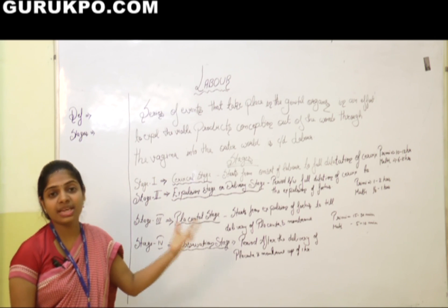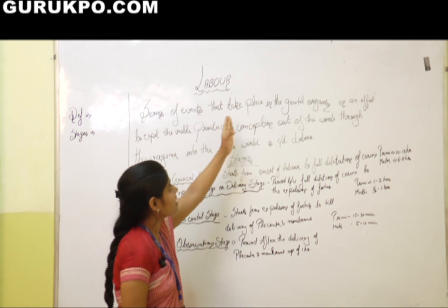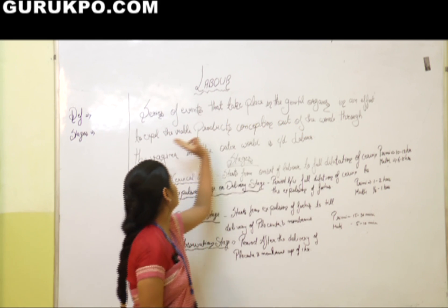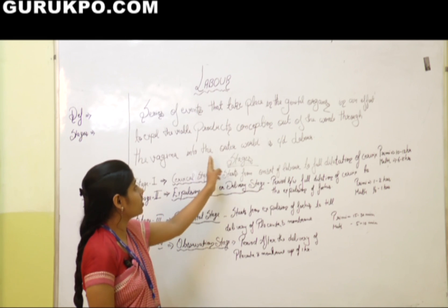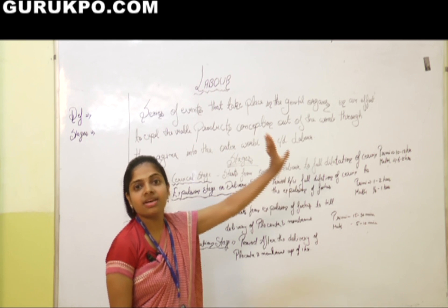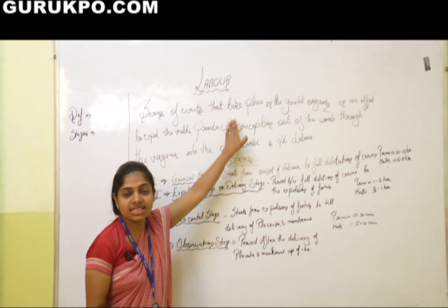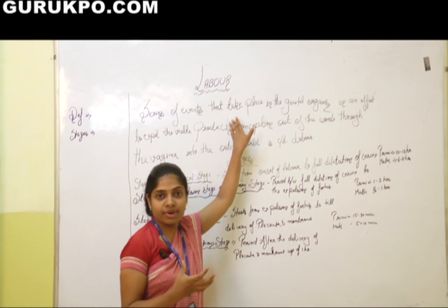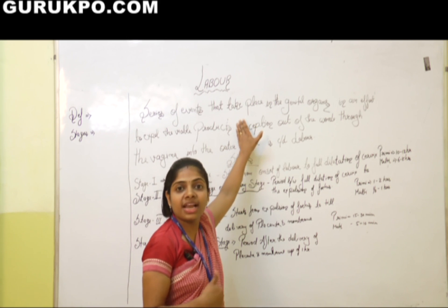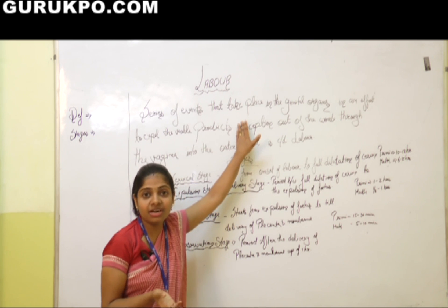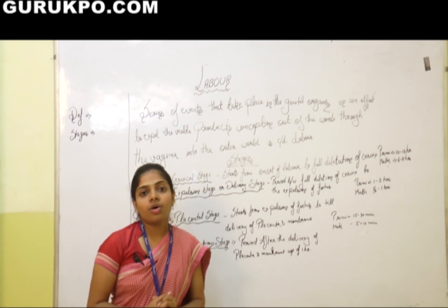Let us first see the definition of labor. Labor is the series of events that take place in the genital organs in an effort to expel the viable product of conception out of the womb through the vagina into the outer world.